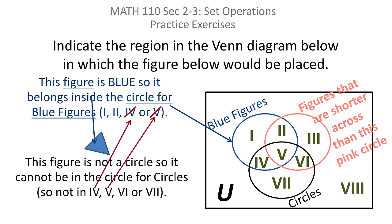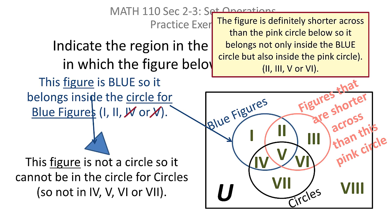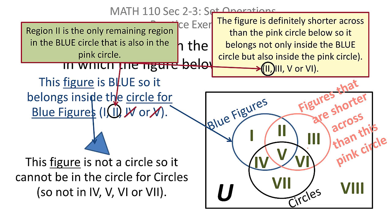But now think about it: two is inside of the pink circle, and the pink circle consists of figures that are shorter across than that pink circle. It doesn't take much to convince you that that blue triangle is shorter across than the pink circle. So that blue triangle also belongs inside the pink circle. The question becomes: how can you put the blue triangle inside of the blue circle and the pink circle without it being in the circle circle?